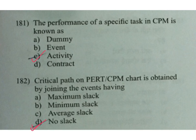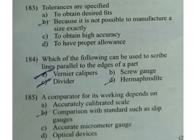Tolerances are specified: A to obtain desired fits, B because it is not possible to manufacture a size exactly, C to obtain high accuracy, D to have proper allowance. B is the answer. Which of the following can be used to scribe lines parallel to the edges of a part? Hermaphrodite caliper. D is the answer. A comparator for its working depends on comparison with a standard such as slip gauges. B is the answer.